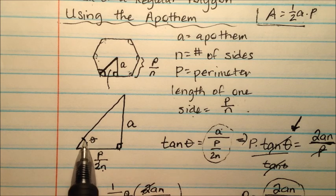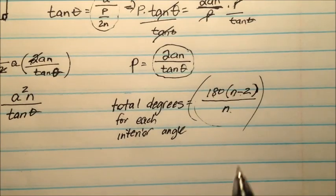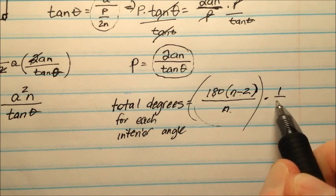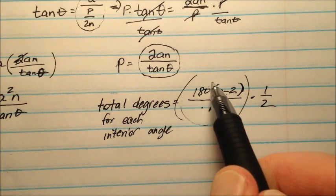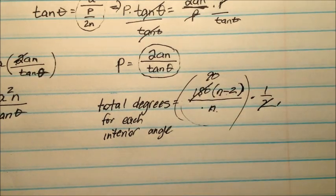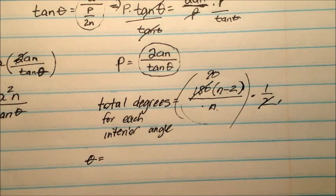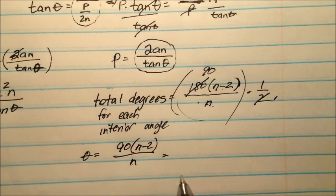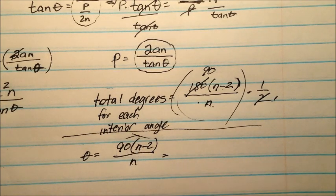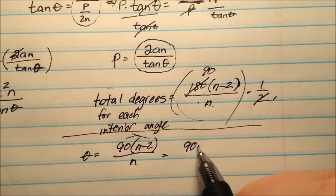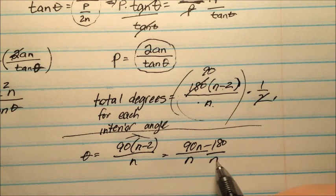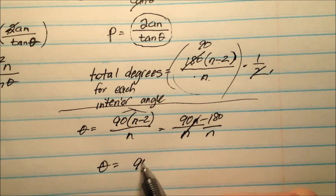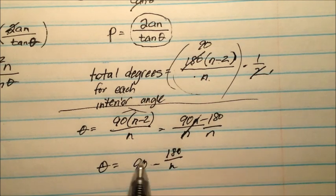So my theta is going to be half of one of those. So I could take my formula and say 180 times this quantity over n and I could times it by one half, or you could put a 2 down here at the n or you could reduce a little bit and cancel it out. So my theta is actually going to turn into 90 times n minus 2 over n or if you wanted to distribute that and maybe simplify a little 90 n minus 180 and each of those terms is over n. You'll see those are going to cancel out. So ultimately my value of theta could be 90 minus 180 over n.